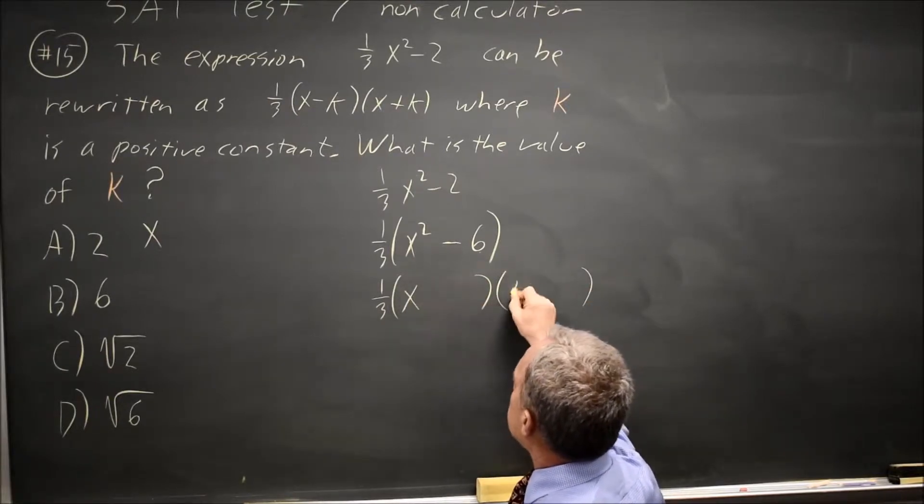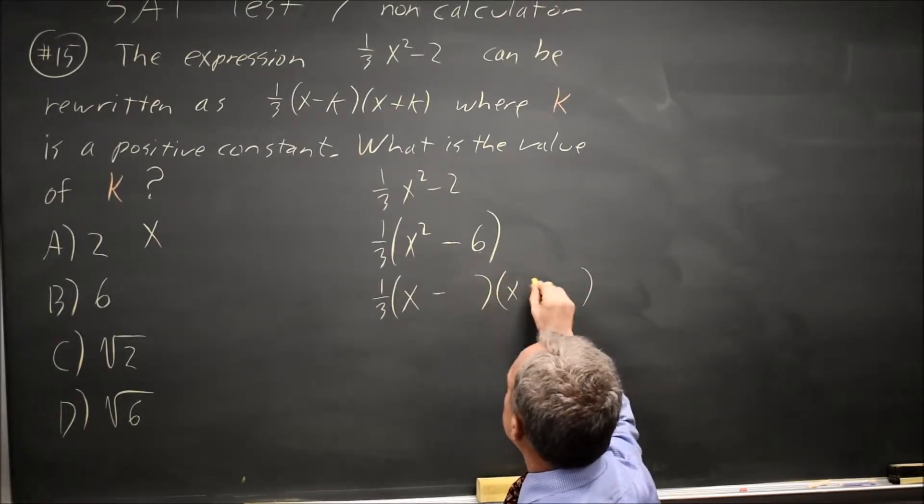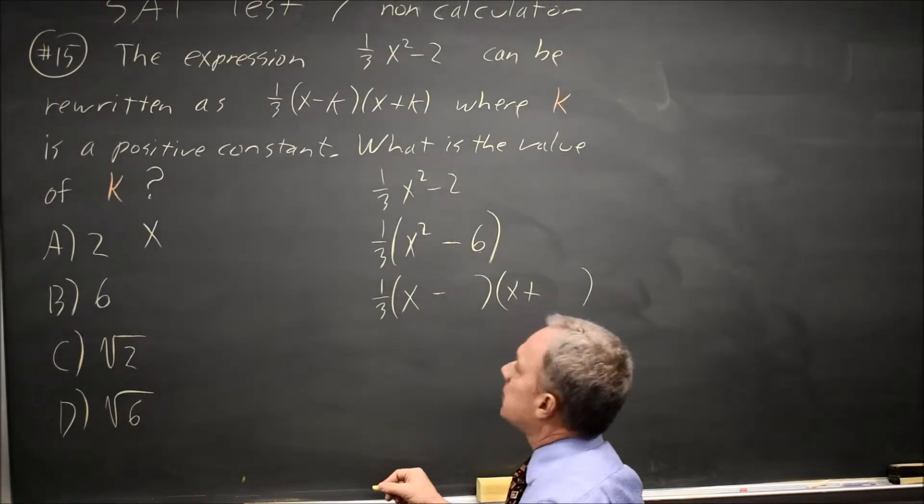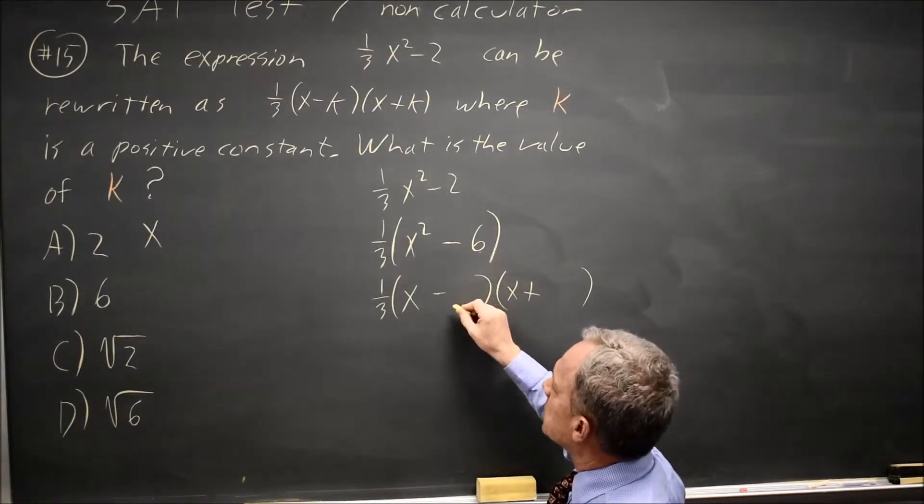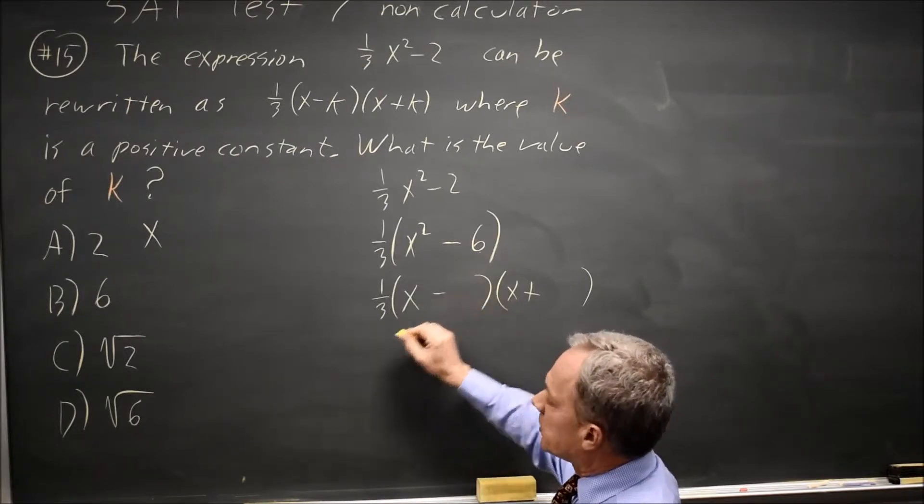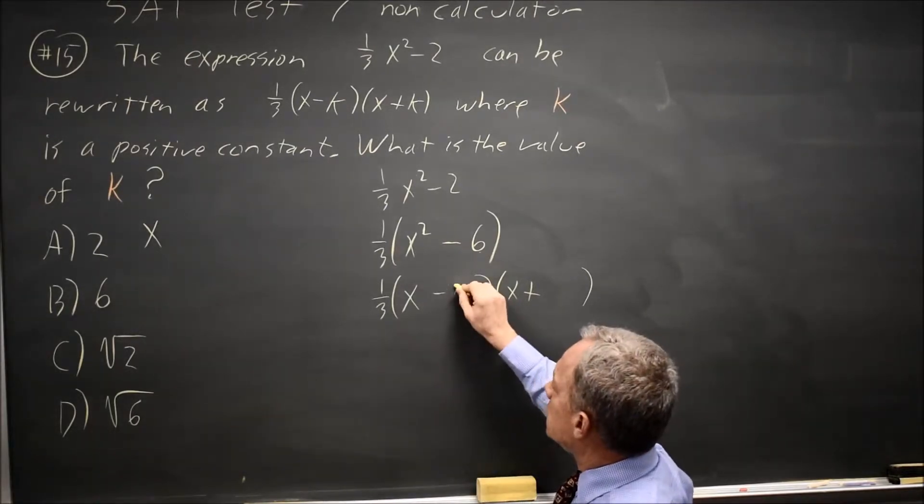And they gave me the form: (x - k)(x + k), where k times k equals 6. The number multiplied by itself that gives you 6 is choice D, √6.